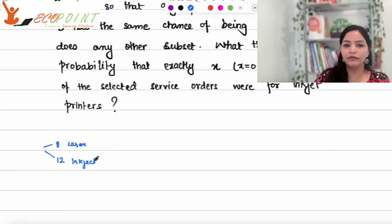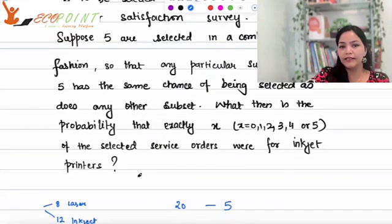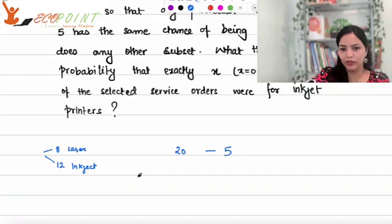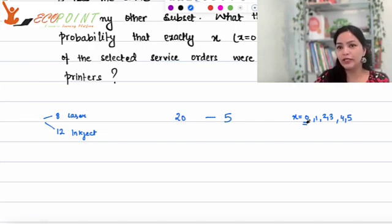Out of 20, out of these 20, 5 are to be selected. What is the probability that exactly x of the selected service orders were for inject printers? Basically, out of these 5, what is the probability? I have given you in the question that x could be 0, 1, 2, 3, 4, 5, because maybe none of the injects are selected so x is 0, maybe one of them is selected so x is 1, maybe two of them selected x is 2, so on and so forth.